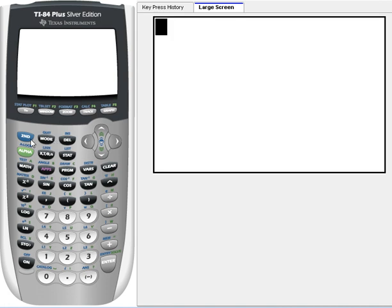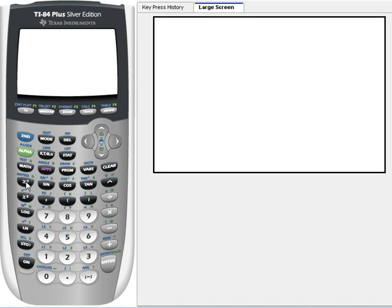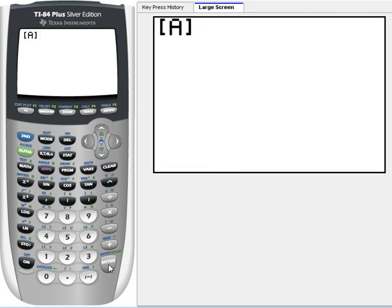In order to call up A, we go second matrix again. Instead of clicking over to edit, we're just going to stay in the names menu and press enter, because that's A, matrix A. Then we press the inverse button, which is right here, x to the negative 1. That gives us our inverse.